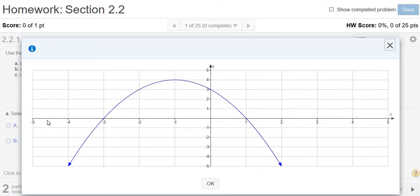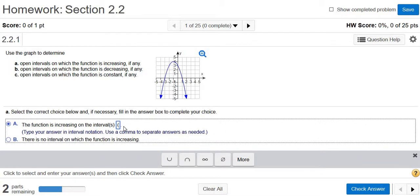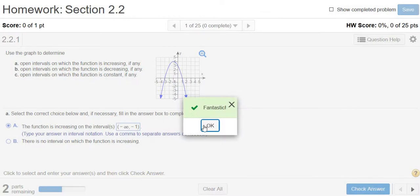Again, from negative infinity to negative 1, the y values are getting bigger. So the answer in this case is parentheses negative infinity to negative 1, and you always want to use parentheses for increasing, decreasing, and constant, always, no matter what. So let me click check answer. And there it is.